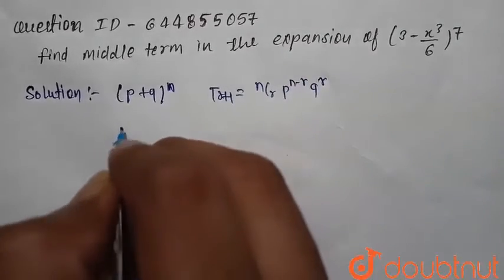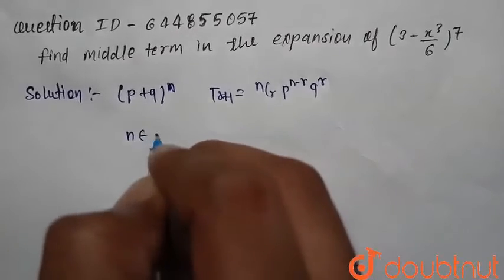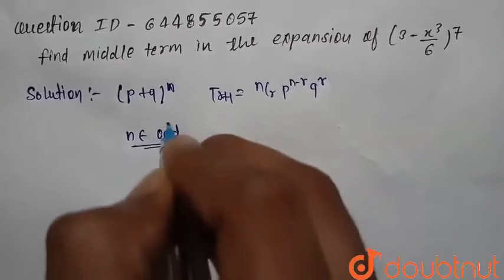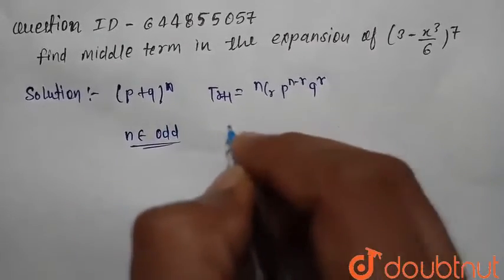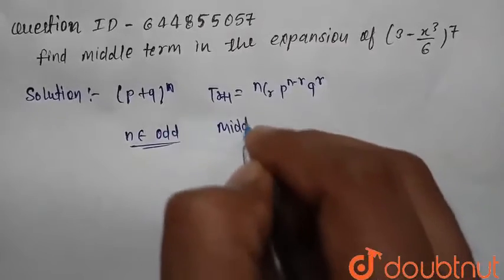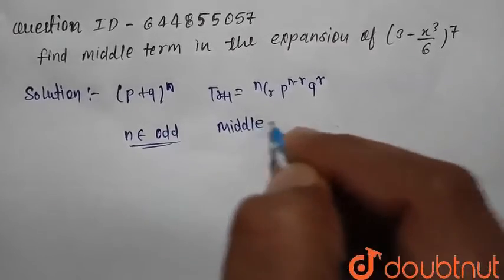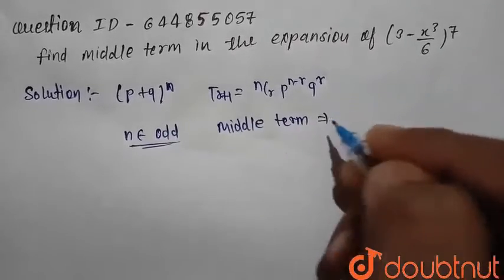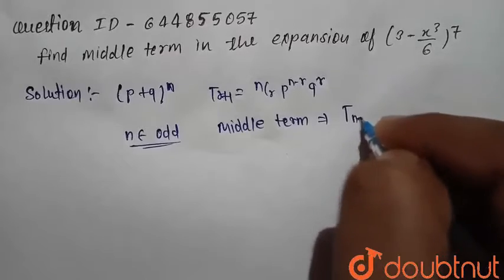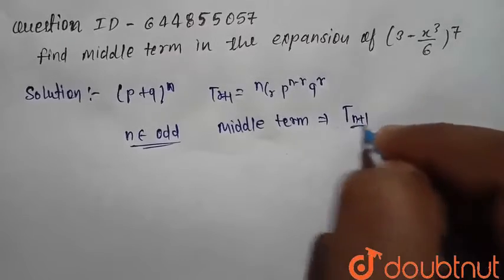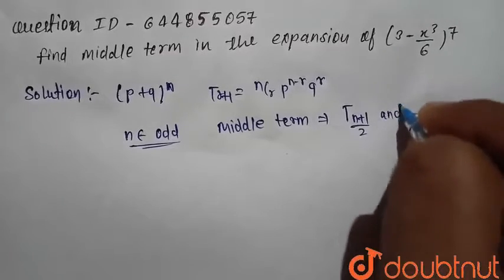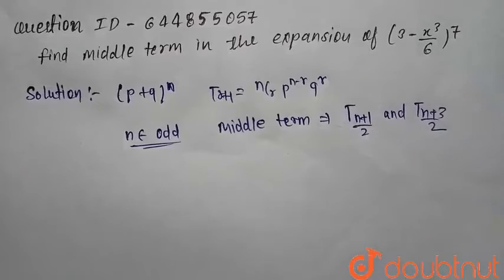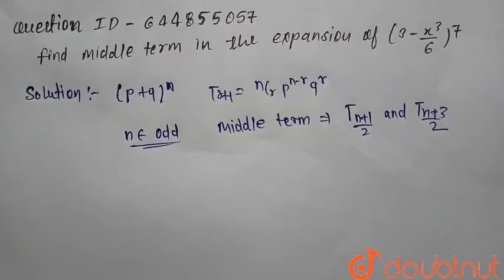Now, the concept is that if n belongs to an odd number, then the middle terms of the expansion are equal to T_(n+1)/2 and T_(n+3)/2. There are two terms as the middle terms.